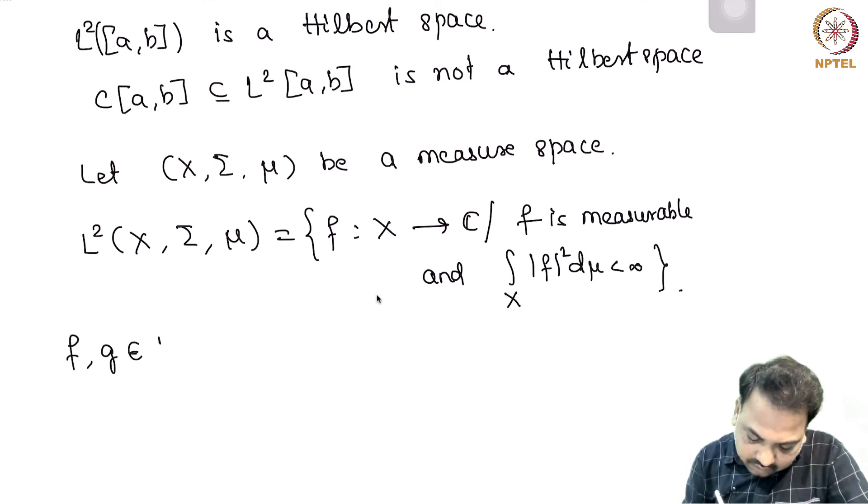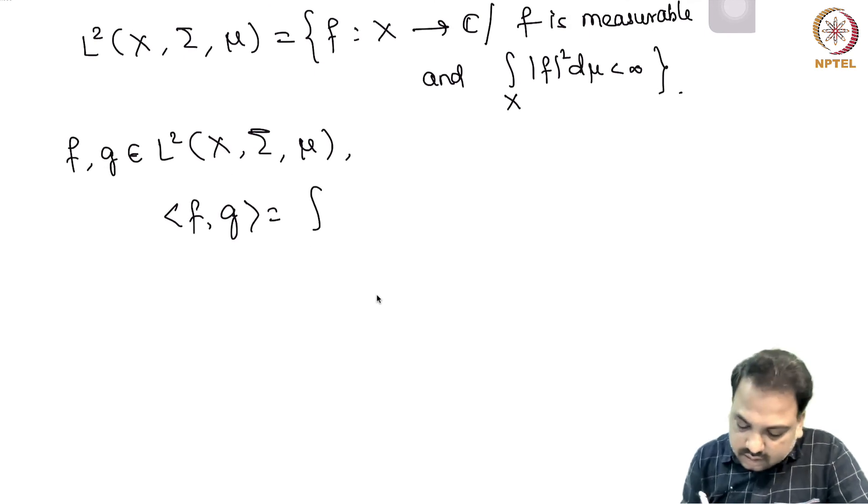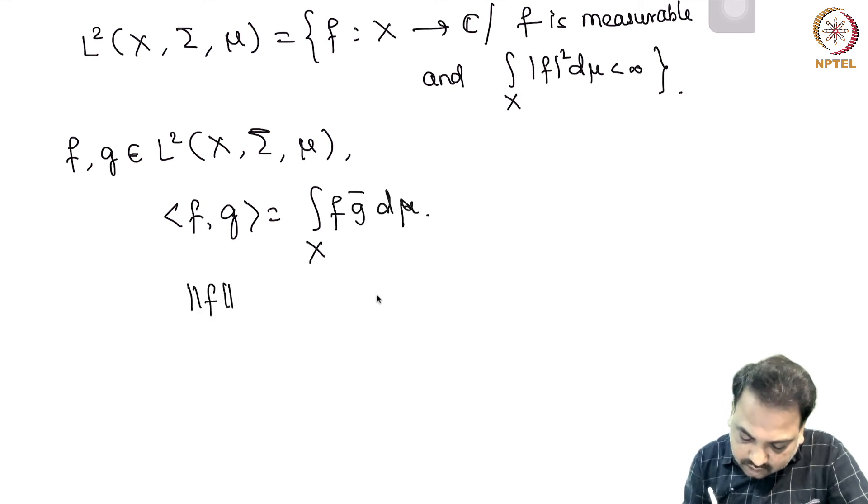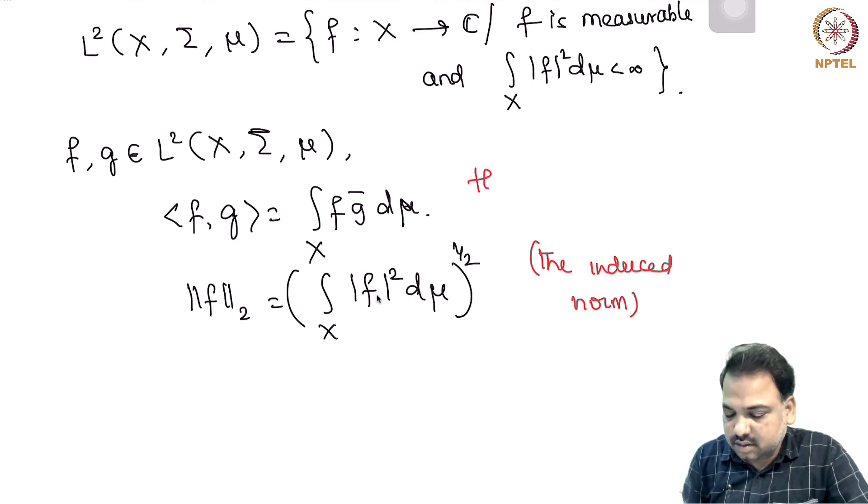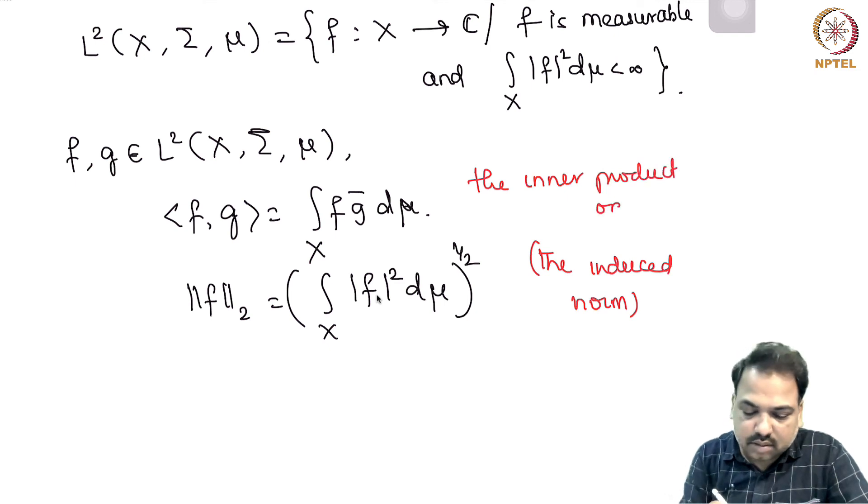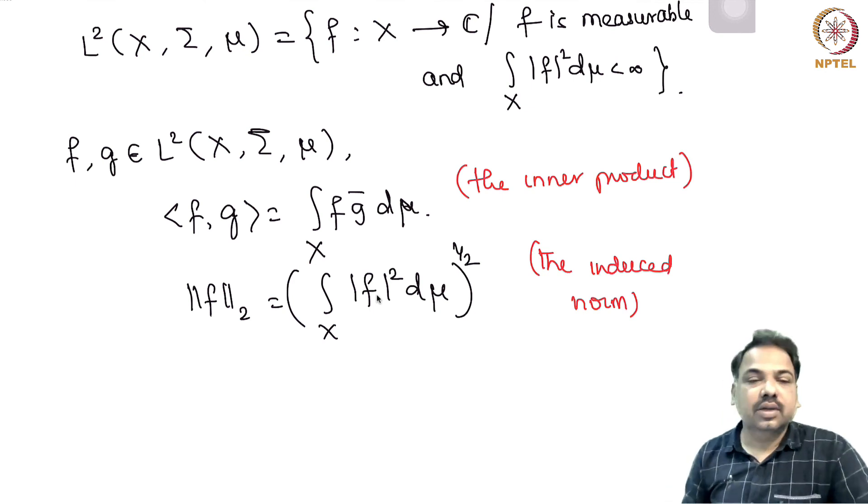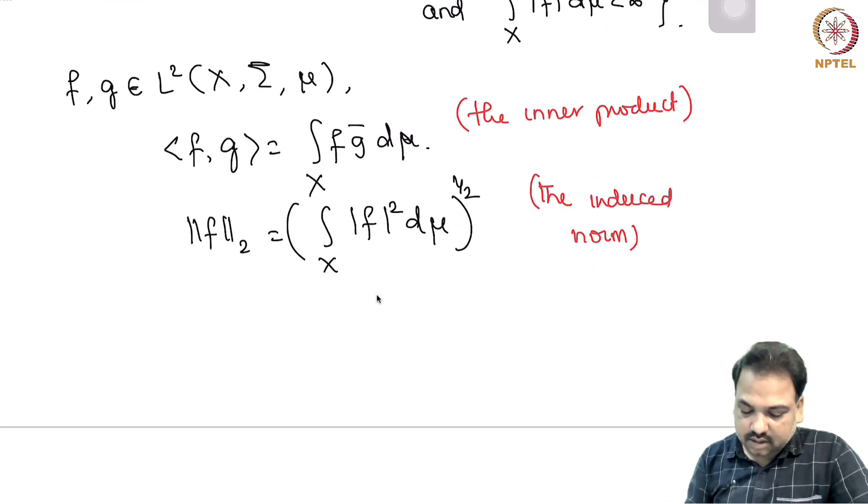So if we take f, g from L^2(X, Σ, μ), we can define the inner product as integral over X of f g bar dμ. And the induced norm in this case is (integral over X of |f|^2 dμ)^(1/2). We can also show that this is a complete inner product space. Hence, this is also a Hilbert space.